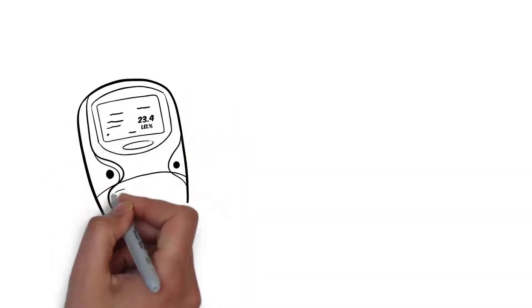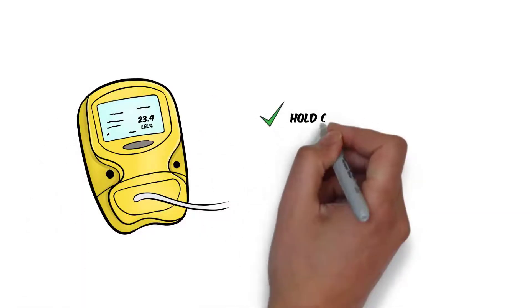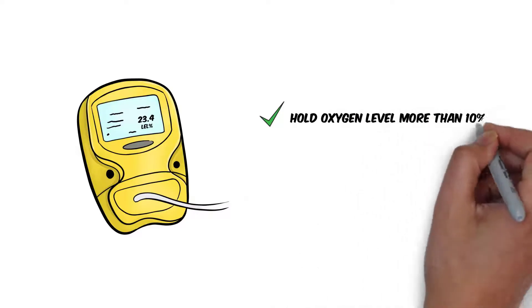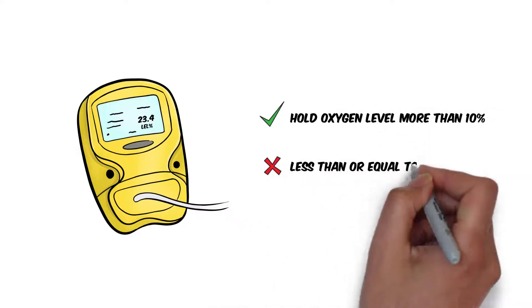In particular, methane levels can be unreliable if the hold atmosphere oxygen level falls to 10% or less, so the following steps need to be taken to ensure a correct methane reading.